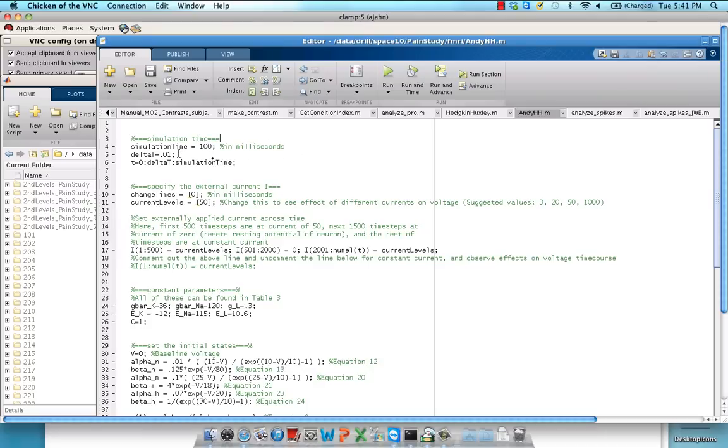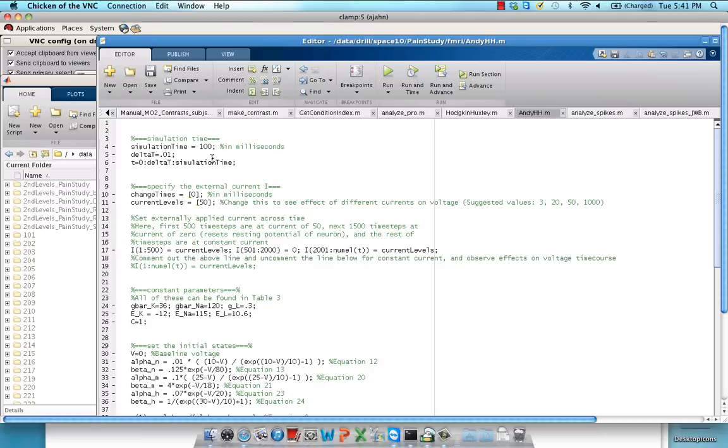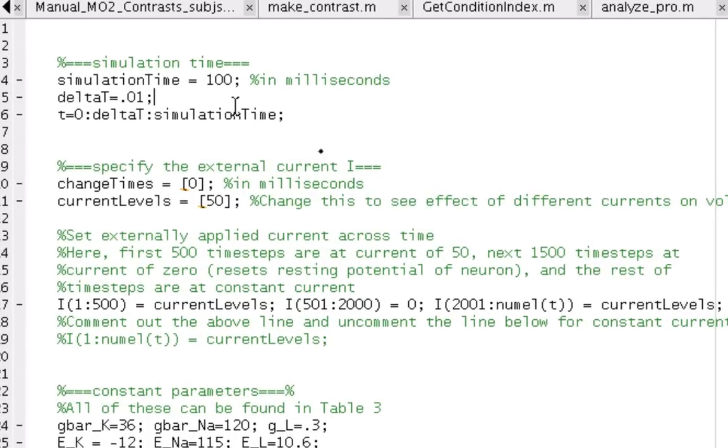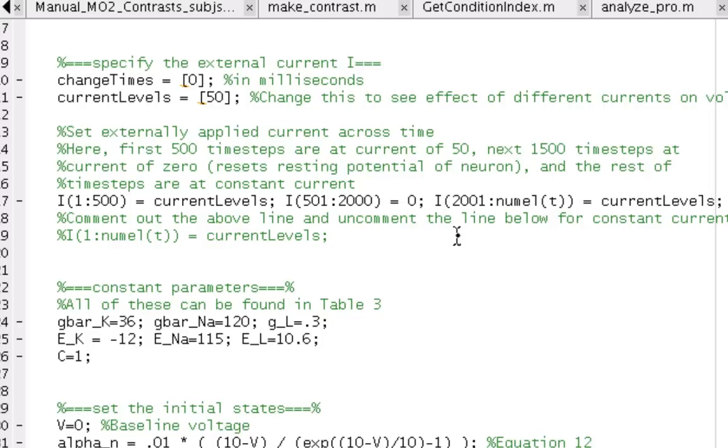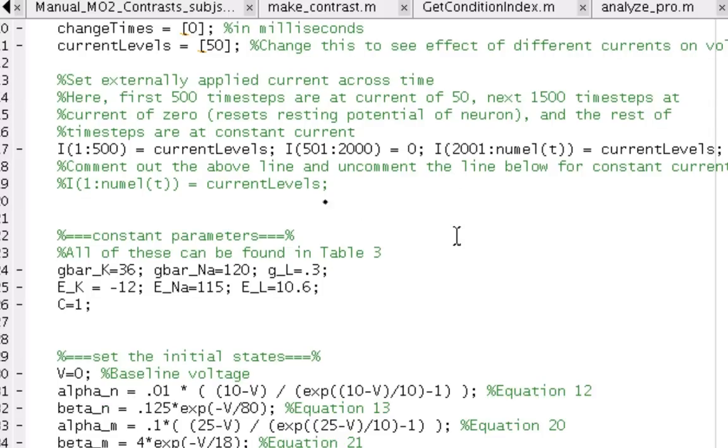First thing, we're going to construct a time course that we can use to observe the changes in voltage and conductances over time. Here I've simply made current available to certain time steps then set it to zero at different time steps and then injected more currents at later time steps, which you can mess around with and see what the effects are of different current levels at different times.